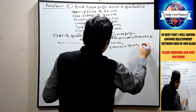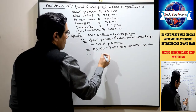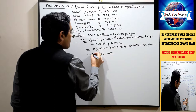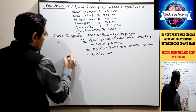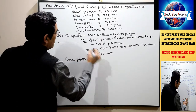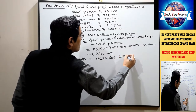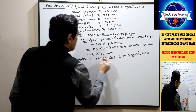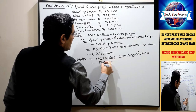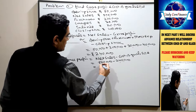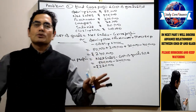So: opening stock plus purchases plus direct expenses minus closing stock. Closing stock is 40,000. So we get: 280,000 minus 40,000 equals 2,40,000. So our cost of goods sold is 2,40,000. Now to find gross profit: gross profit equals net sales minus cost of goods sold. That is 5,00,000 minus 2,40,000 equals 2,60,000. So our gross profit is 2,60,000.